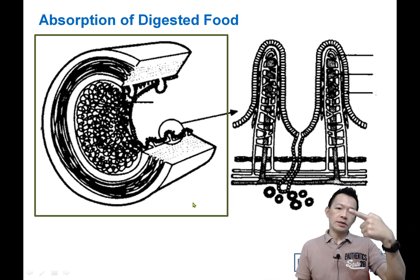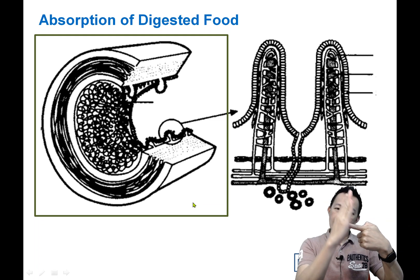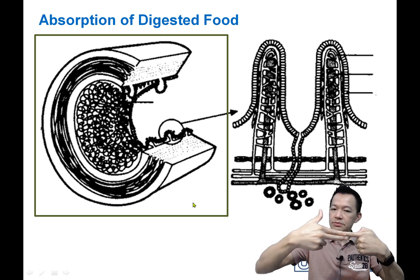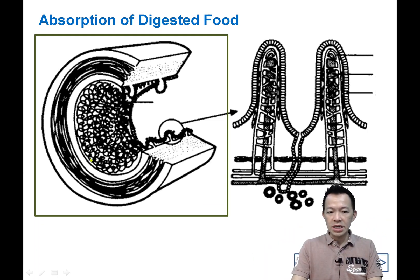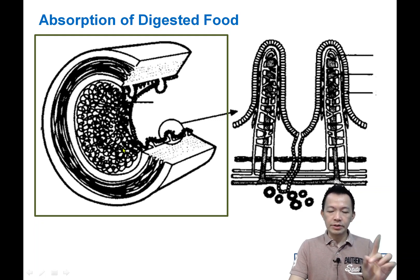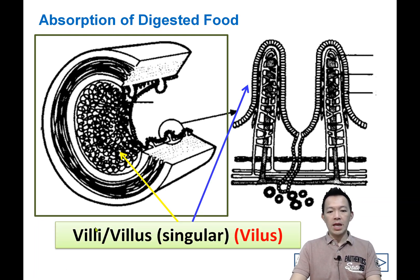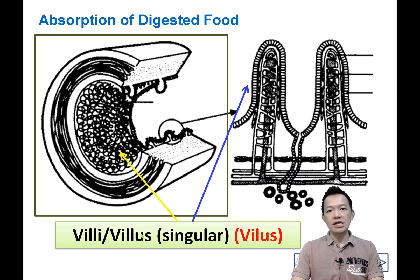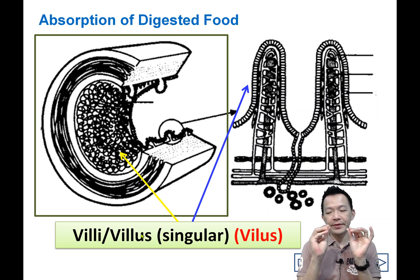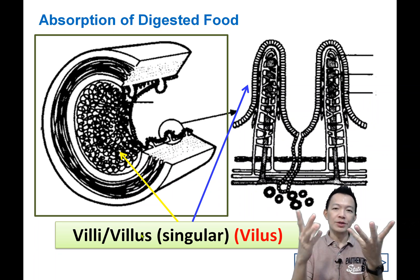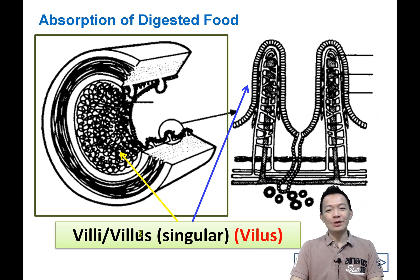So let's say this is a small intestine. You cut the small intestine and you look at the inner surface of the small intestine. So under the microscope, you can see something like this. If I magnify it, it will look like this — this is something that we call villi, or singular: villus. You check the dictionary, it's called 绒毛 (villi).